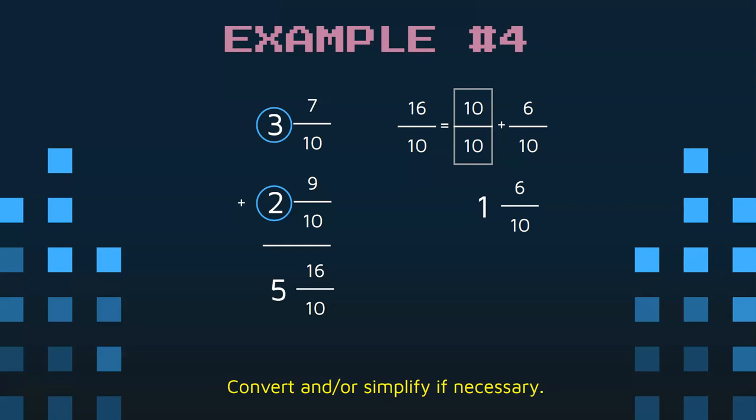Well, we certainly can convert because 16 tenths is an improper fraction. So we're going to convert that to 1 and 6 tenths. But 6 and 10 are both even. So I know I can also simplify 6 tenths down to 3 fifths. Don't forget the 6. You've got to remember that whole number.